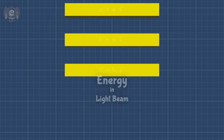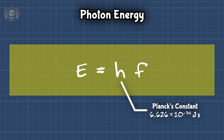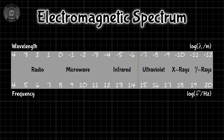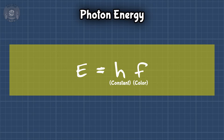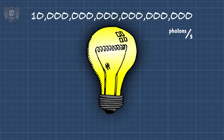You can calculate it using E equals HF. The H is Planck's constant, which is extremely small. The F is frequency, which tells you what type of light it is, and in the visible range it tells you color. So the energy of a photon is a constant times its color. For that 60 watt light bulb, that's 10 million trillion photons per second. That's a lot of photons!